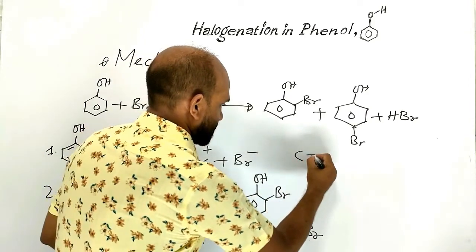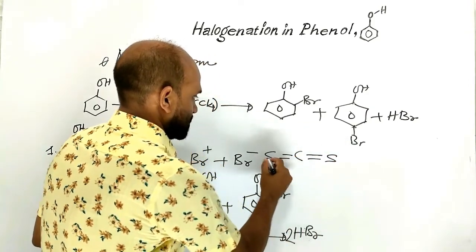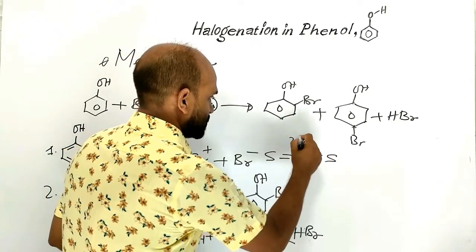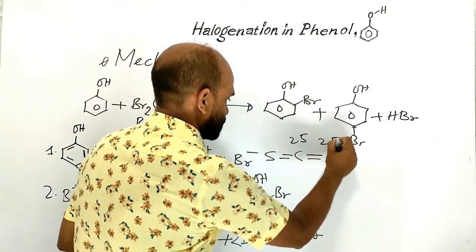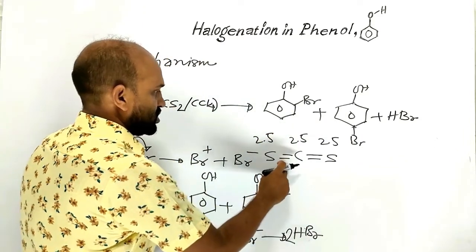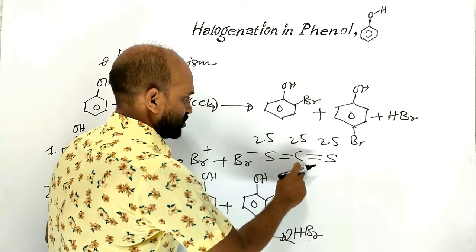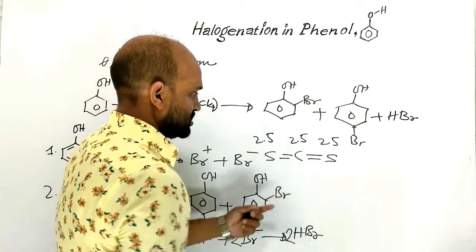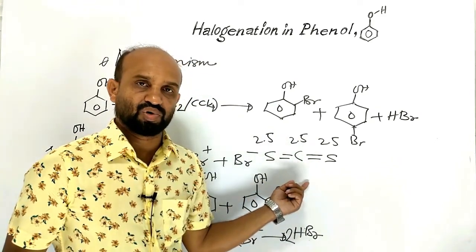Carbon disulfide: the electronegativity of carbon is 2.5 and sulfur is 2.5 as well, so no polarity occurs in carbon disulfide. Carbon disulfide is a non-polar molecule, and its dipole moment is zero.